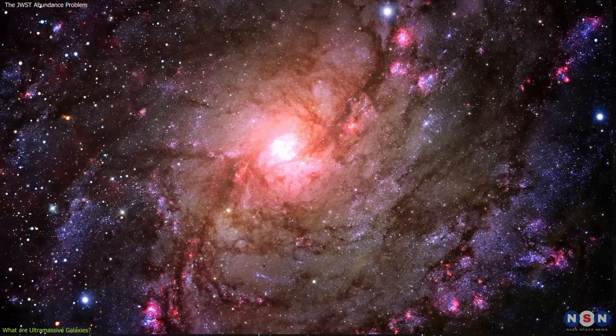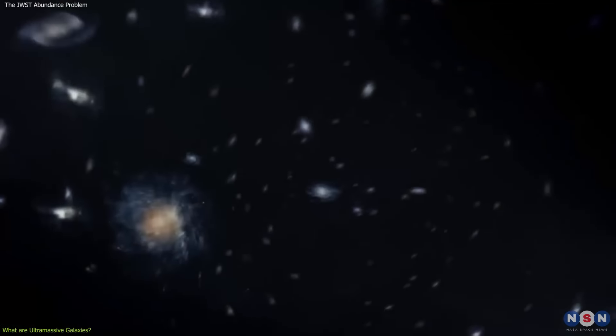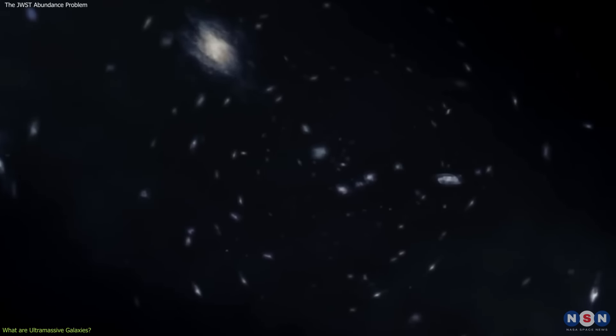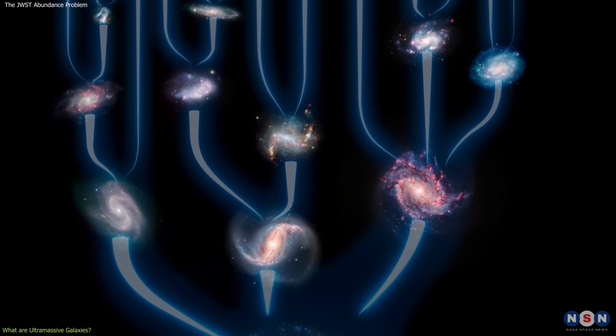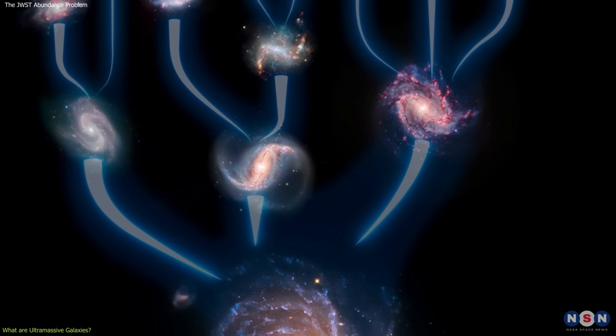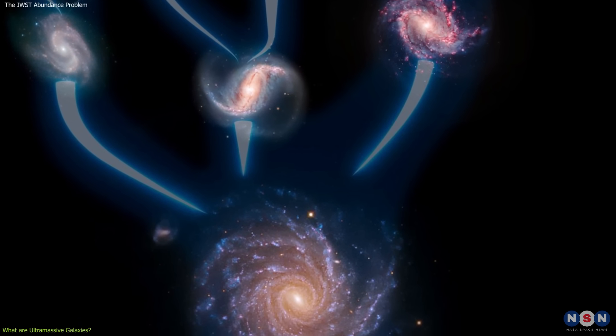But the ultramassive galaxies detected by James Webb seem to violate these predictions. They are very large, bright, and metal rich, and they are very abundant in the early universe. They seem to have skipped the hierarchical formation process and jumped to the end product of galaxy evolution.